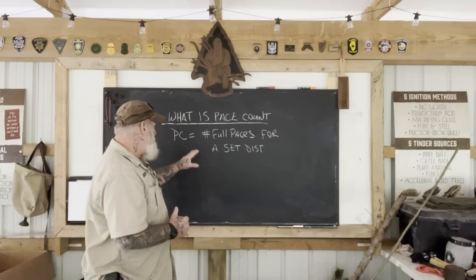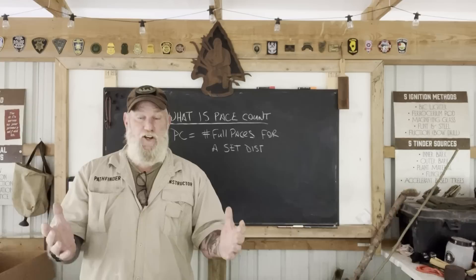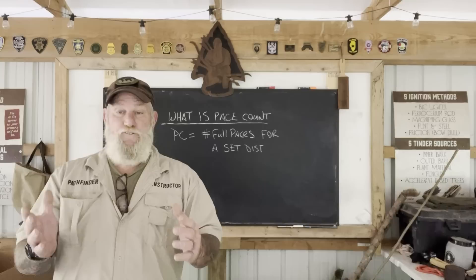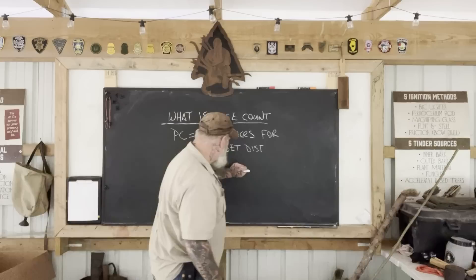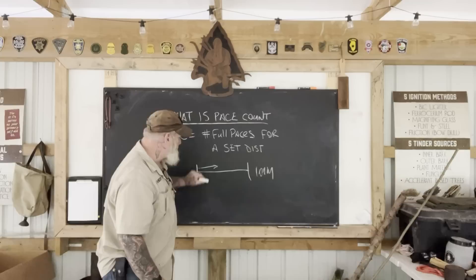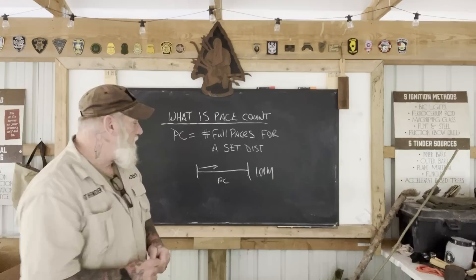Here at the Pathfinder School, we use everything in meters. If you are tracking paces for a map that you've created yourself, everything can be measured in paces and you don't need to worry about meters — it's just how many paces from one point to another. If you're using a map and trying to track distance covered versus linear distance on a map, then you need to count paces in meters. You find two points of reference 100 meters apart, walk that distance, and count every full pace.